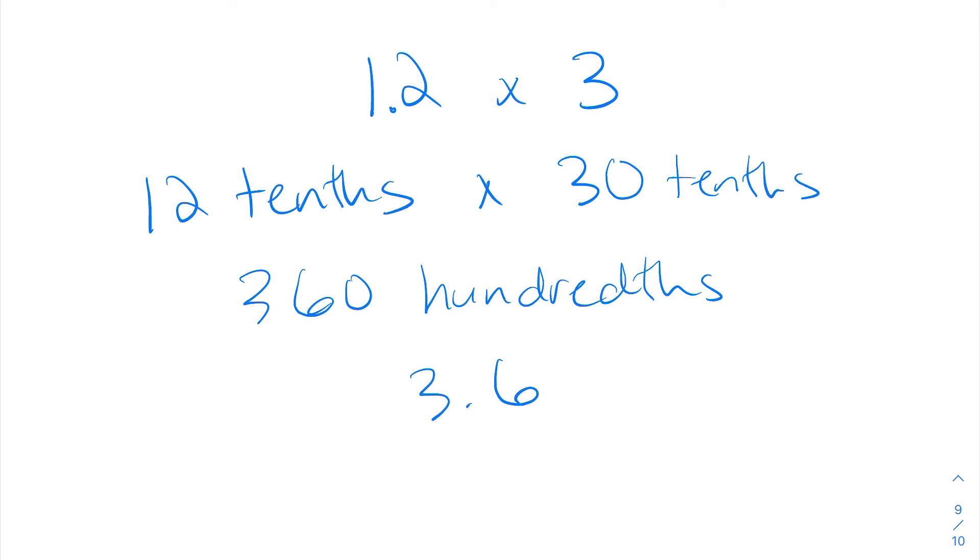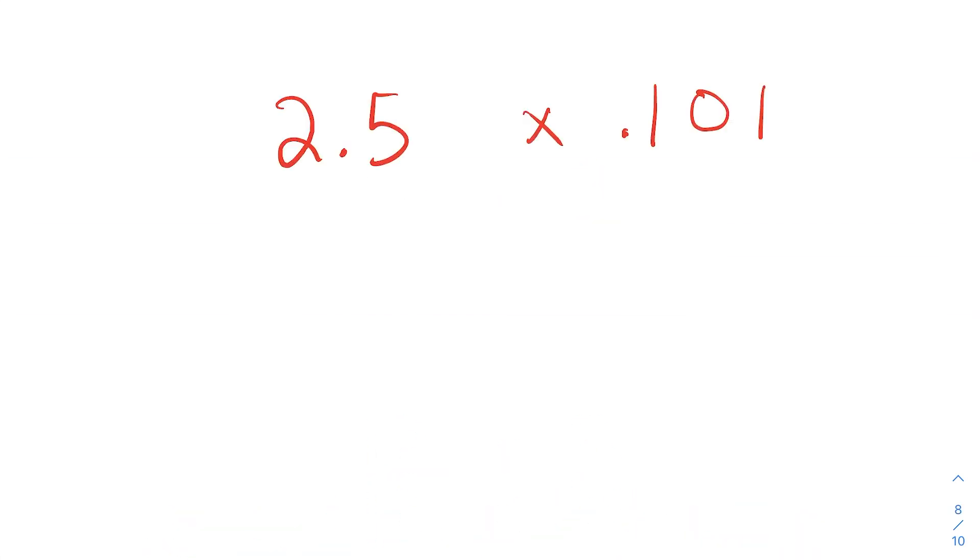Okay, here's the last example. Can you figure it out for me? You probably might need a calculator. Hey, if you can do this in your head, bravo, you are a genius. I can't even do that. So go grab a calculator and start trying to multiply this. This will be our last example. 2.5 times .101. Press pause now and if you press play I'll give you a quick hint.